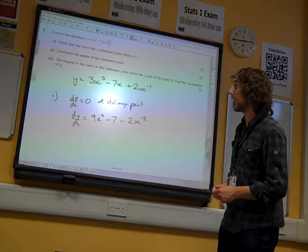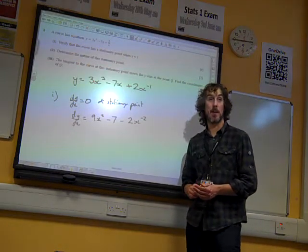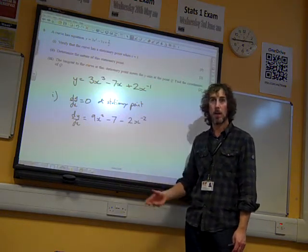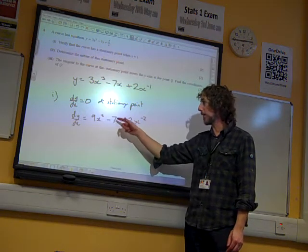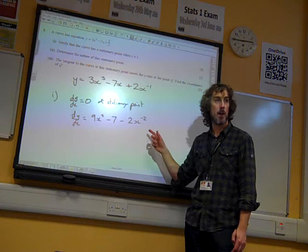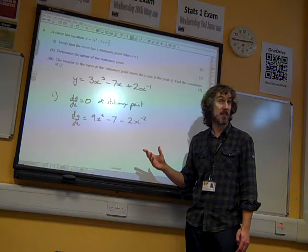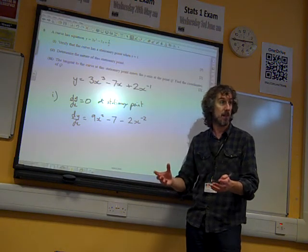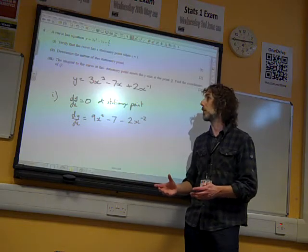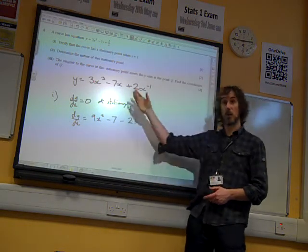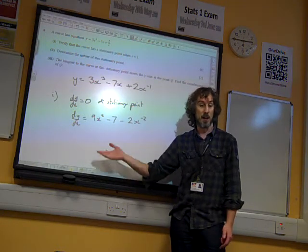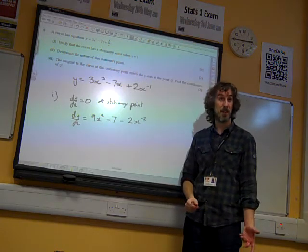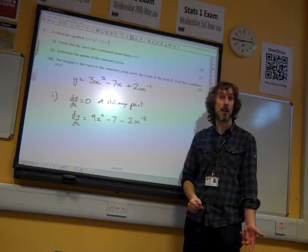Now this question said verify that it has a stationary point when x equals 1. I would like to think that at this point we'd take this equation, we'd write it as 9x squared minus 7 minus 2 over x squared equals 0. We'd multiply through by x squared. It's a stealth quadratic now in x to the 4. We'd do a substitution, we'd factorize it, and we'd find that one of those roots was x equals 1. That's more than 5 marks worth, having done this already. But that's what I'd like to think we might want to do. When it says verify, that actually just means we now need to sub in x equals 1 and check it gives an answer of 0.